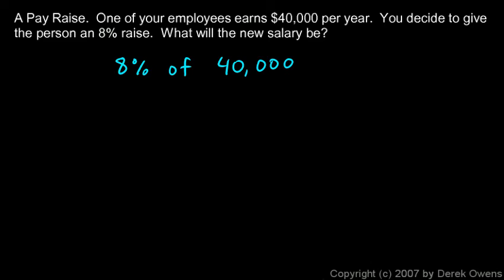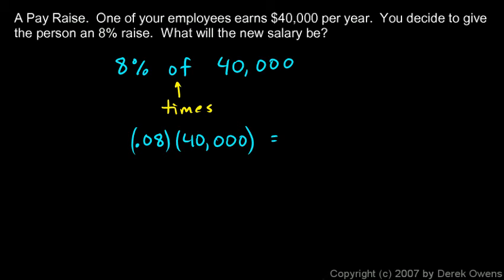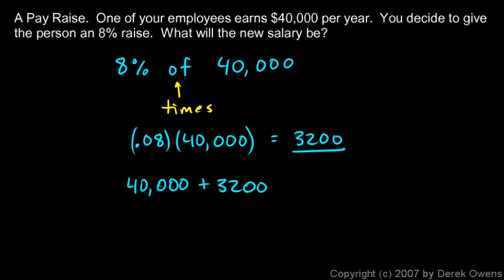That's pretty easy to do. Just remember, 'of' means times. So we calculate 8%, which is 0.08, times $40,000, and that comes out to $3,200. So they get a raise of $3,200, making their final salary $40,000 plus $3,200 — and you can do that in your head — $43,200 is the new salary.